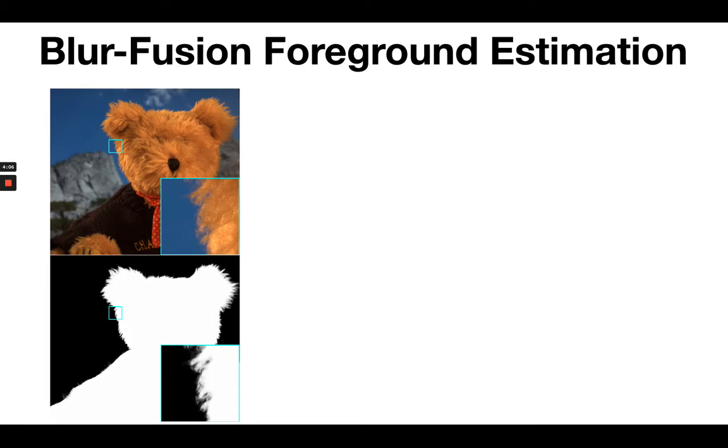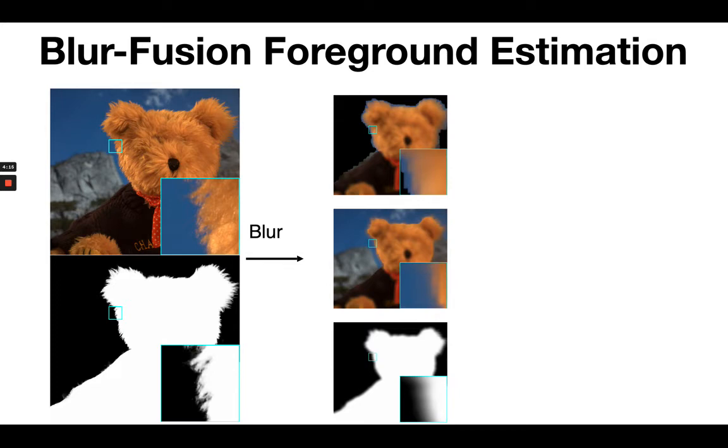Here is a visual example. So we have a teddy bear and an alpha matte provided to us from another matting algorithm. We first do our blur step. And these are the intermediate results. And then we do the fusion.